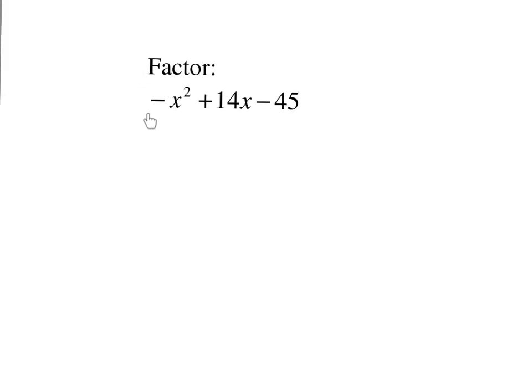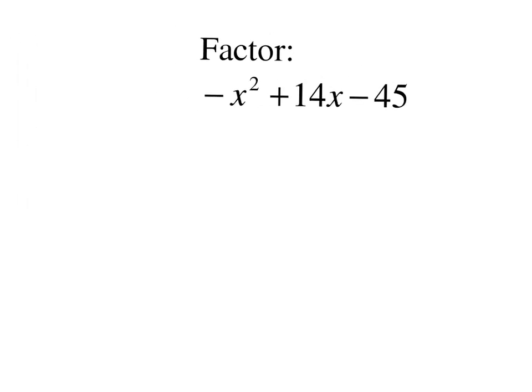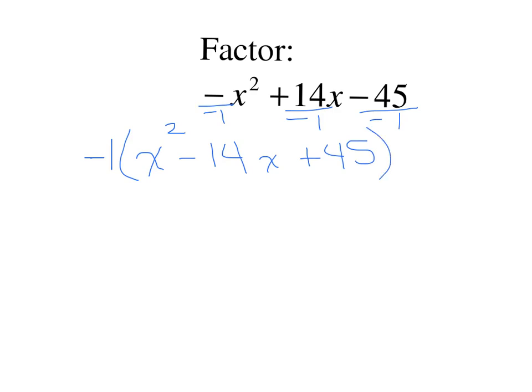This trinomial is tricky because of the negative sign on the lead coefficient. There's a rule that we can't start factoring with a negative lead coefficient, so we need to remove it by taking out a negative 1 as a GCF — just as we did in the last section. Factoring out negative 1 means dividing everything by negative 1, leaving positive x squared minus 14x plus 45. It just changes the signs so we can factor. The negative 1 doesn't go away — it remains in your final answer.